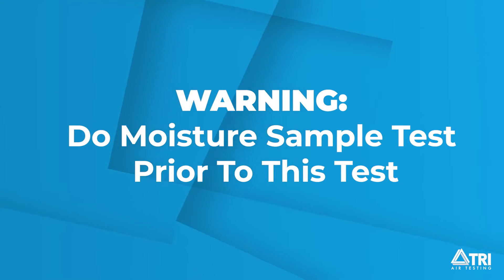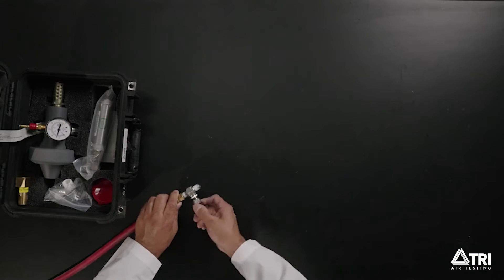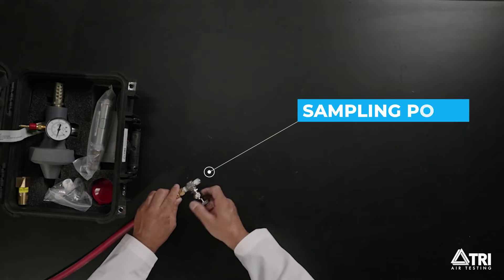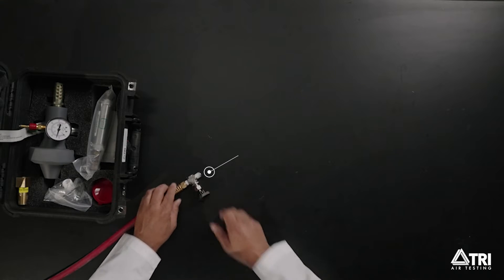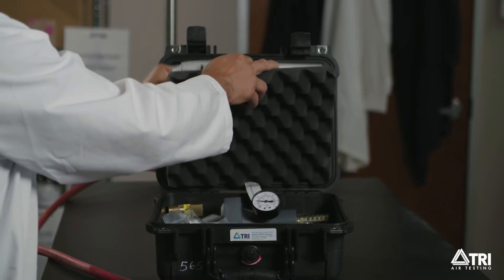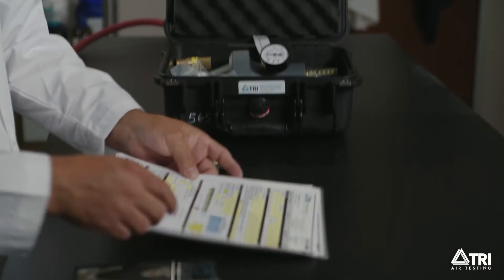Allow your compressor to run with air flowing from the sampling point for at least five minutes before sampling. While that's running, grab your data sheets which are located behind the foam lid.